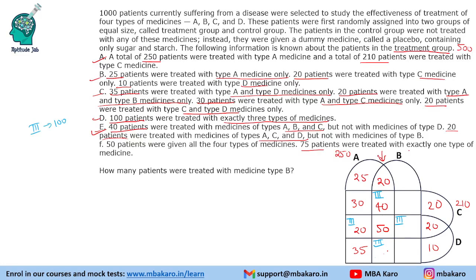75 patients were treated with exactly one type of medicine — that is the sum of the individual-only regions. We already have 20, 30 and 55 accounted for, so the B-only region shall be 20. This is also done.